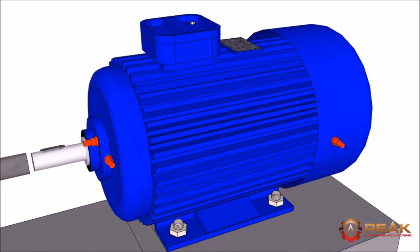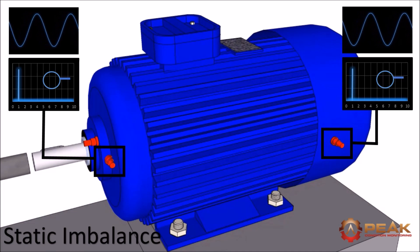Let's assume the fault's present in the motor. A high 1x peak could indicate one of three types of imbalance. The only way to differentiate between them is by measuring the phase of the vibration.